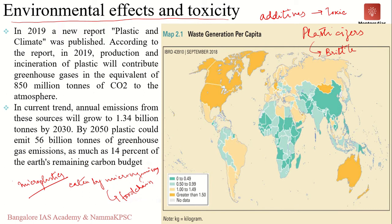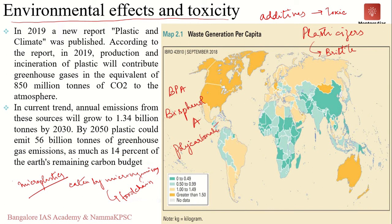Another toxic concern is BPA, or bisphenol A. Polycarbonates, generally used to make bottles, use BPA as a building block. BPA is an endocrine disruptor and is also said to cause heart disease. Continuous exposure to plastic — for consuming food, drinking water, or through toys — may cause harmful effects due to leaching. We have yet to fully understand how plastics can result in diseases or harmful effects on organisms.